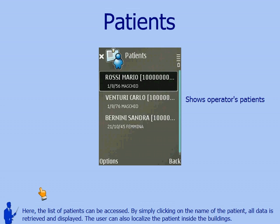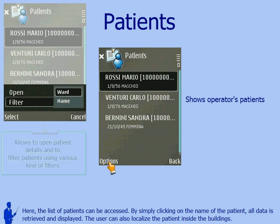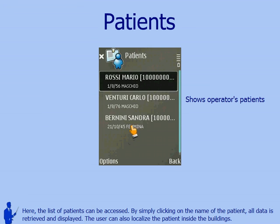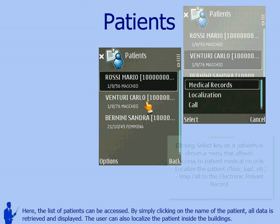Here, the list of patients can be accessed. By simply clicking on the name of the patient, all data is retrieved and displayed. The user can also localize the patient inside the buildings.